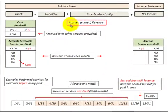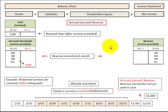In this presentation we're going to look at accrued or earned revenue. We're going to use the accounts receivable account to accrue those revenues. Remember, accounts receivable is an asset on the balance sheet, and then we're going to recognize those revenues as we earn them in the revenue account, which is part of net income on the income statement.